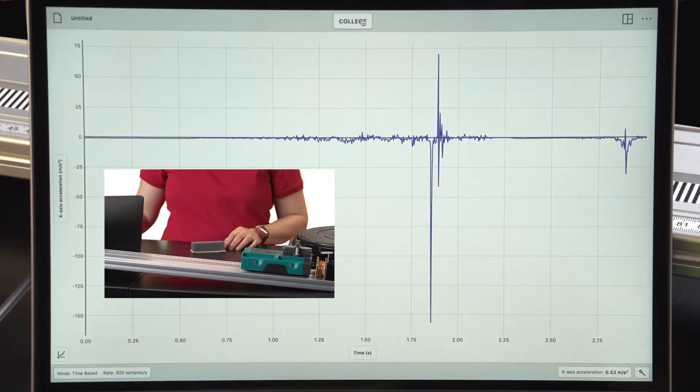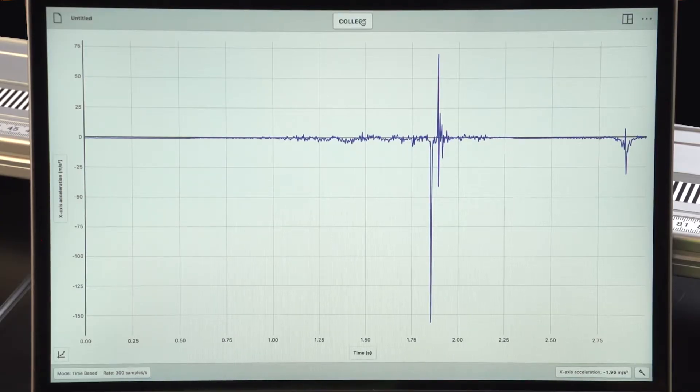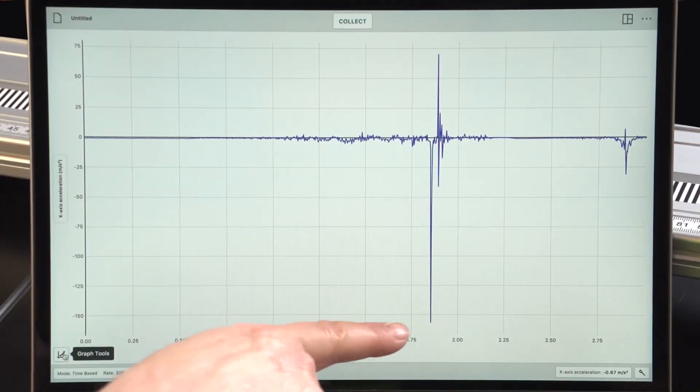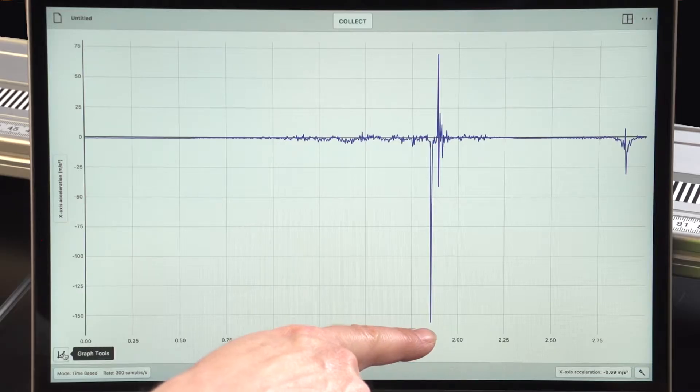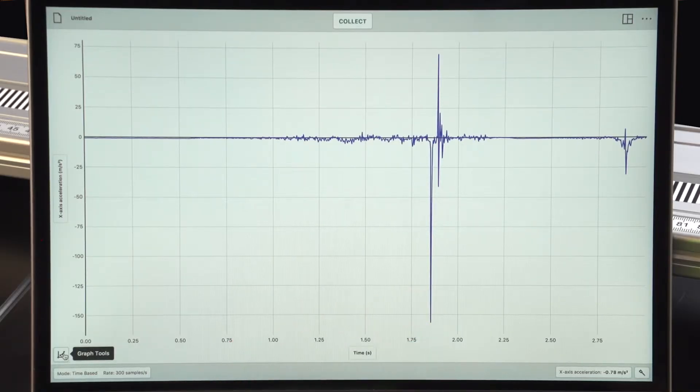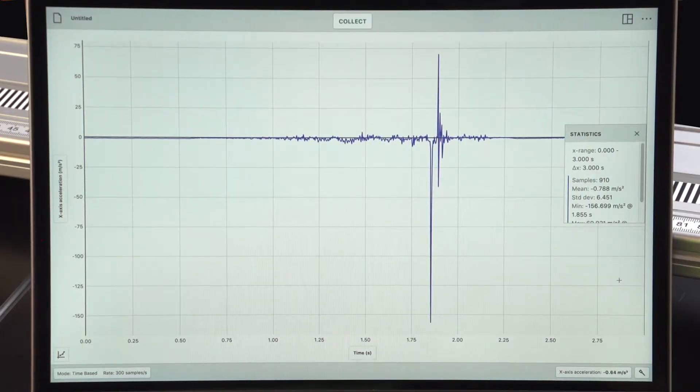I can use the statistics function in Graphical Analysis to determine what my maximum acceleration was, or in this case, since it's a negative acceleration, what the minimum value is. So it looks like the minimum value is negative 156.699 meters per second squared. That's a lot of acceleration.